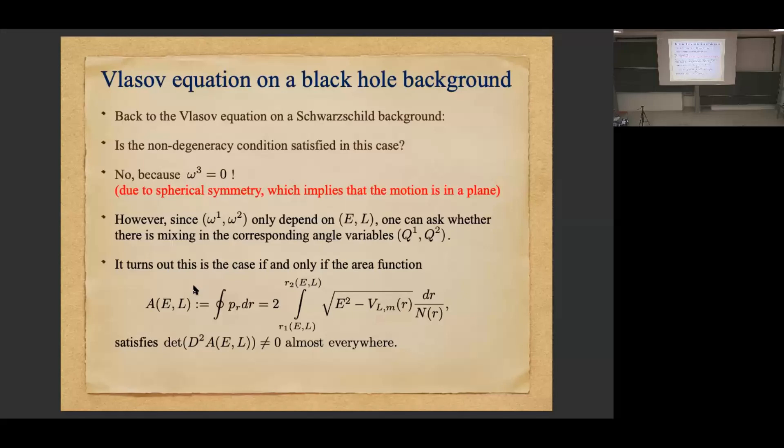Back to the Vlasov equation on Schwarzschild background: can you apply the theorem? The answer is no, because ω_3 = 0. If ω_3 is zero, the Jacobian matrix is degenerate — it has a zero column — so the determinant is everywhere zero.